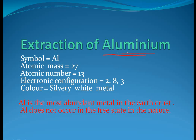Before starting the extraction of aluminium from its ore bauxite, let's know a few things about aluminium. Aluminium is a metal with the symbol Al. Its atomic mass is 27 and its atomic number is 13. The electronic configuration of aluminium is 2, 8, and 3.